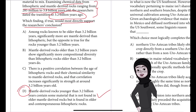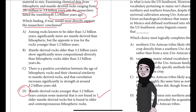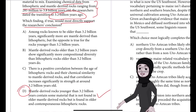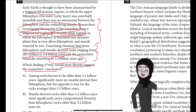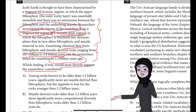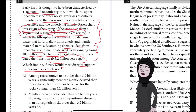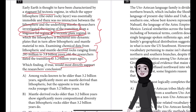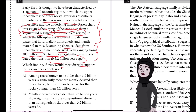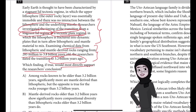Choice D is the best answer because it presents a finding that, if true, would most directly support the researchers' conclusion that the transition from stagnant lid regime to a tectonic plate regime occurred around 3.2 billion years ago. Early in Earth's history, Earth exhibited a stagnant lid regime in which there was no interaction between the lithosphere and the underlying mantle. By contrast, once the Earth began to exhibit a tectonic plate regime, its lithospheric and mantle material began to mix.